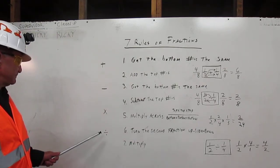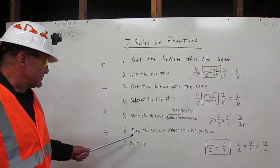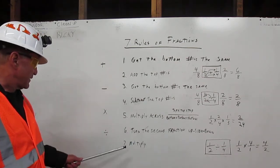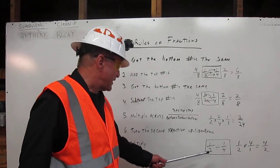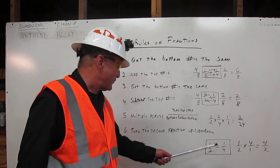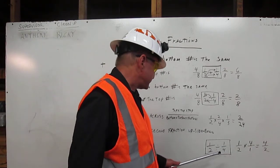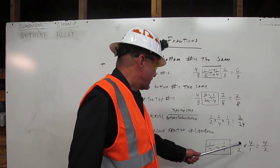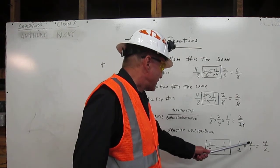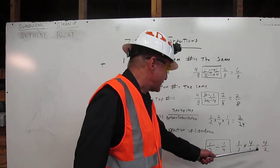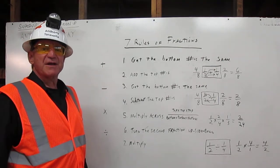To divide fractions, we have two rules. The first rule is turn the second fraction upside down, and then we multiply. In our example, we're going to divide one-half by one-fourth. So we're going to turn the one-fourth upside down. You get one-half times four over one. One times four gives us four. Two times one gives us two. Our answer is four over two. And those are the seven rules of fractions. Thank you.